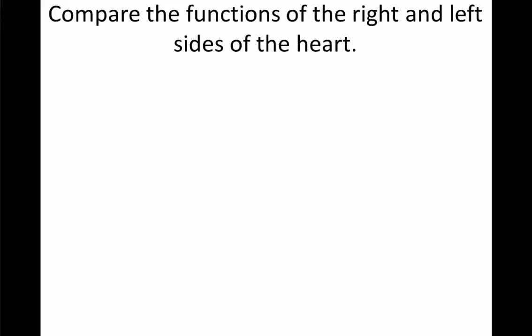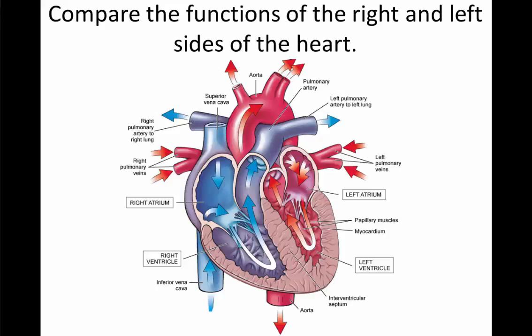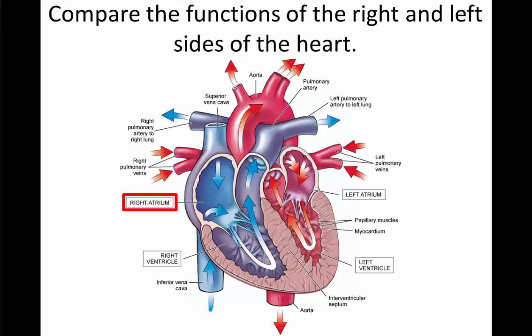Let's take a closer look at the functions of the right and left sides of the heart. Here we have the superior vena cava and inferior vena cava. 'Superior' means above or from the top of the body, and 'inferior' refers to below or coming up from the bottom. Vena cava stands for a vein that's large like a cave. The superior and inferior vena cava are the veins that bring blood back from the top and bottom portions of the body to the heart, emptying into the right atrium. The blood flows through the tricuspid valve down into the ventricle, and then the atria contract, squeezing the maximum amount of blood down into the ventricles.